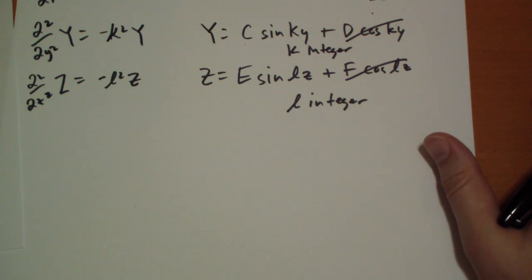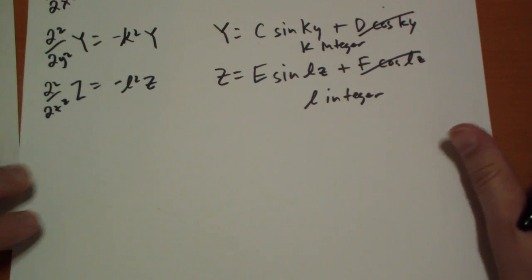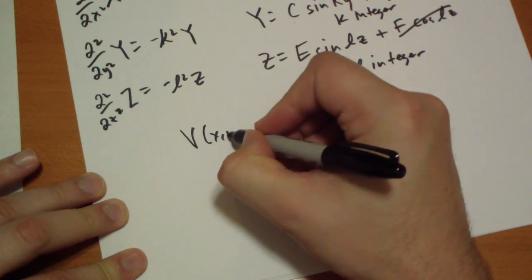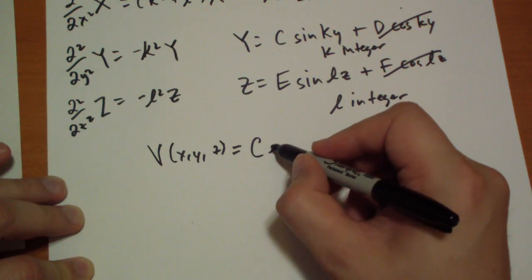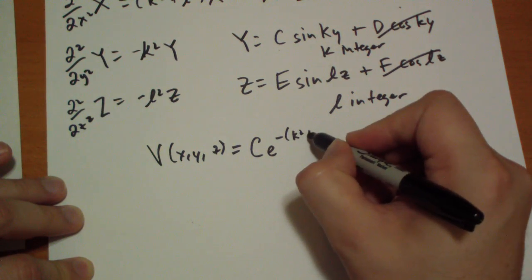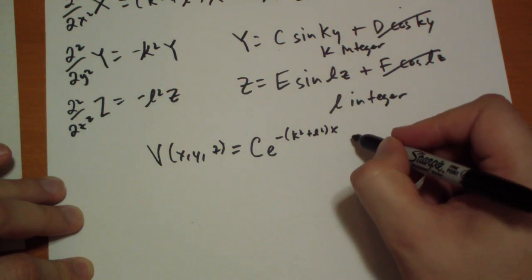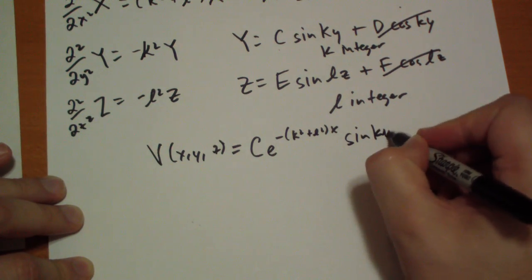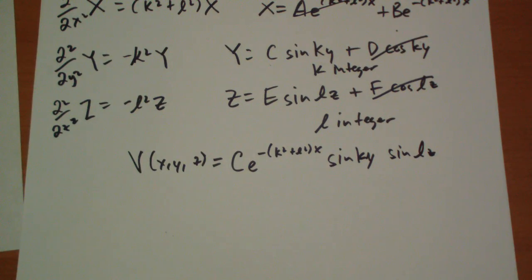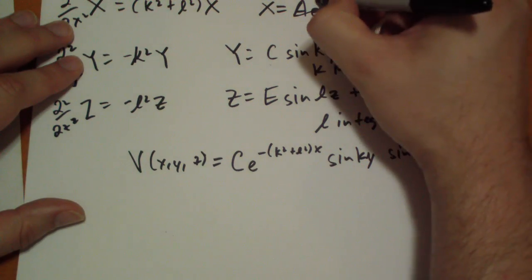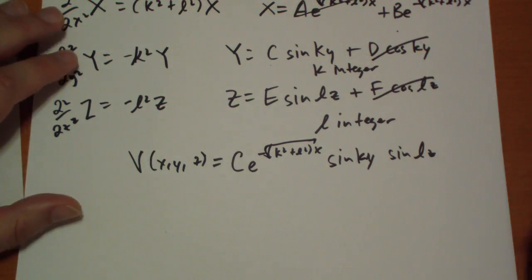So, we get v of x, y, and z will be equal to c e to the minus square root of k squared plus l squared x. Sine of ky, where k is an integer. Sine of l z, where l is an integer as well. It's the square root of k squared plus l squared, isn't it? And I feel stupid now. It is the square root of k squared plus l squared.